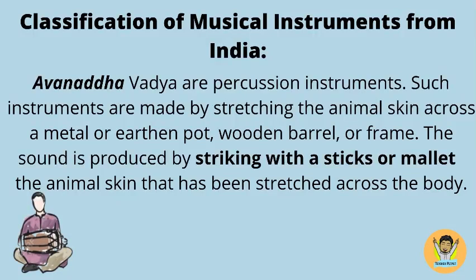Avanata Vadya are percussion instruments. Such instruments are made by stretching animal skin across a metal or earthen pot, wooden barrel, or frame. The sound is produced by striking with a stick or mallet the animal skin that has been stretched across the body.